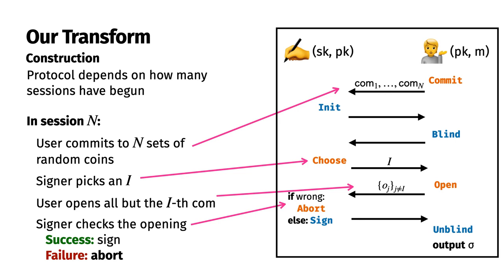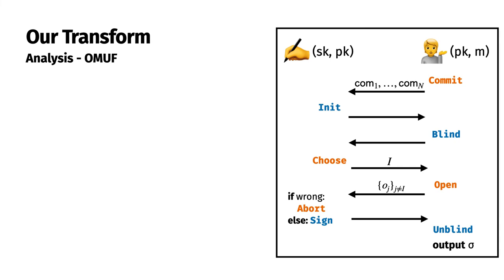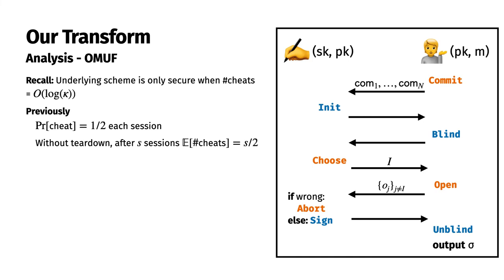We now compare this to the original Poincheval transform. First, remember that we can only afford O of log kappa many signatures in the underlying scheme. The goal of both Poincheval's and our transformations in their security proofs is to limit the number of such signatures. Previously, the probability of a user getting away with cheating was one half in each session. If a teardown weren't enforced, a user could cheat linearly many times, which would potentially break the underlying scheme. Thus, teardowns are necessary.